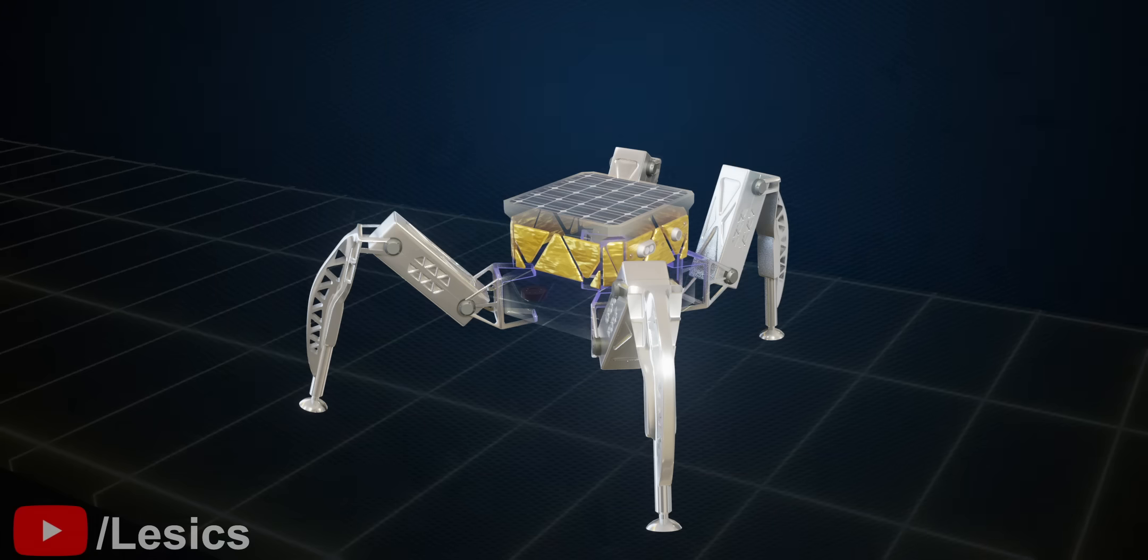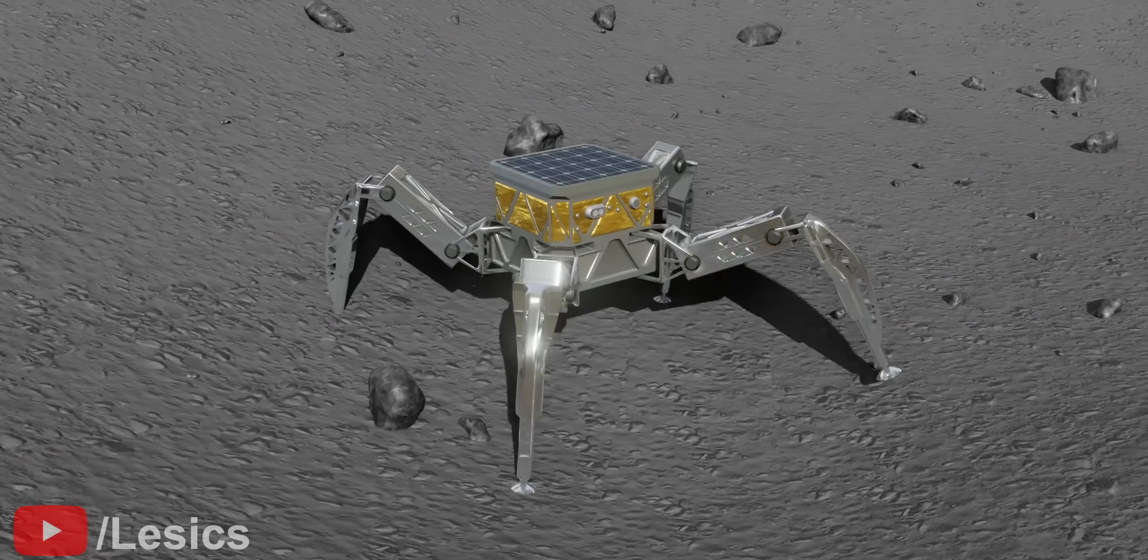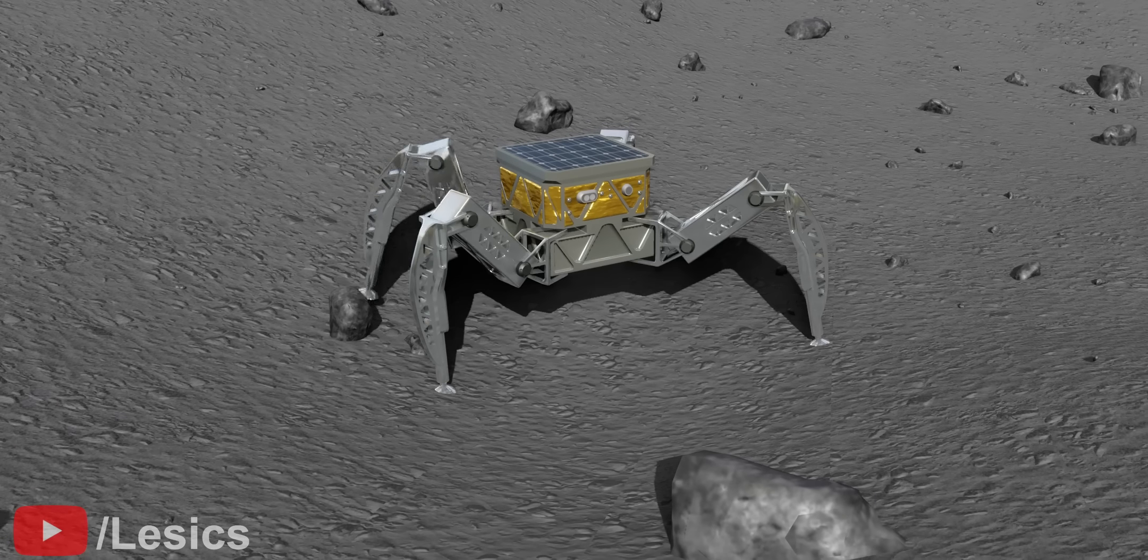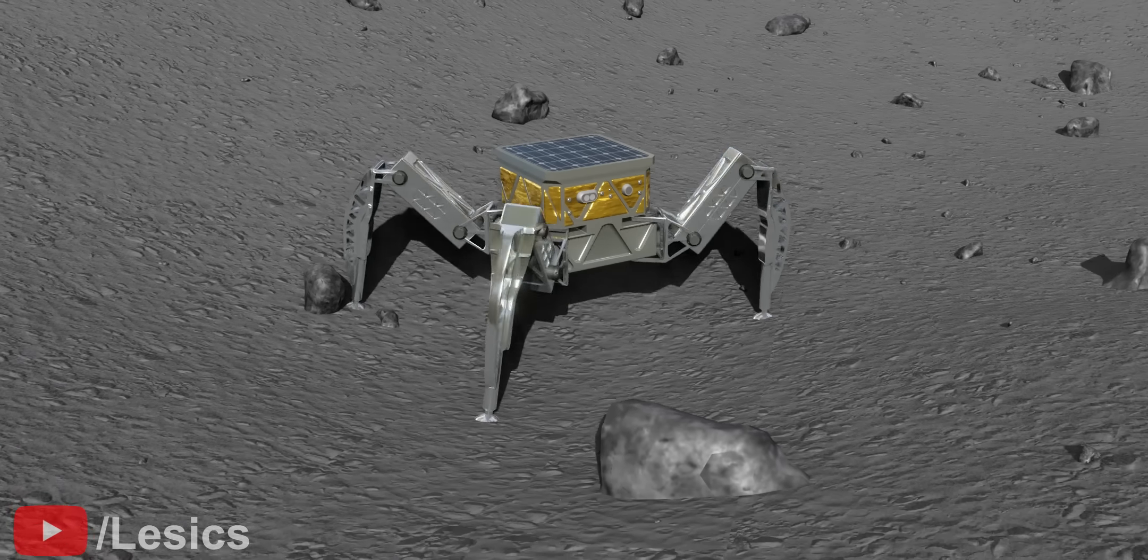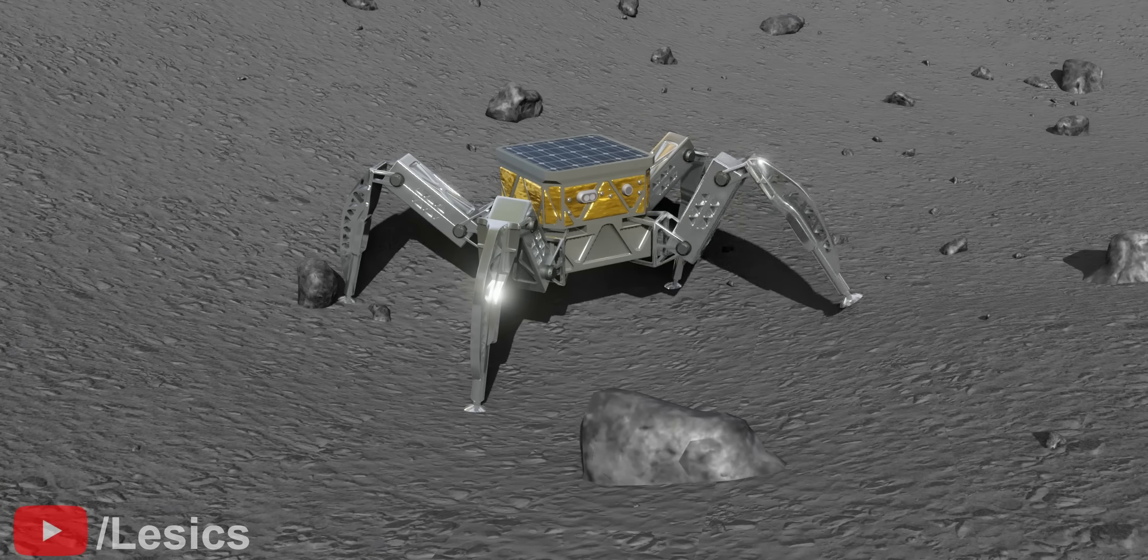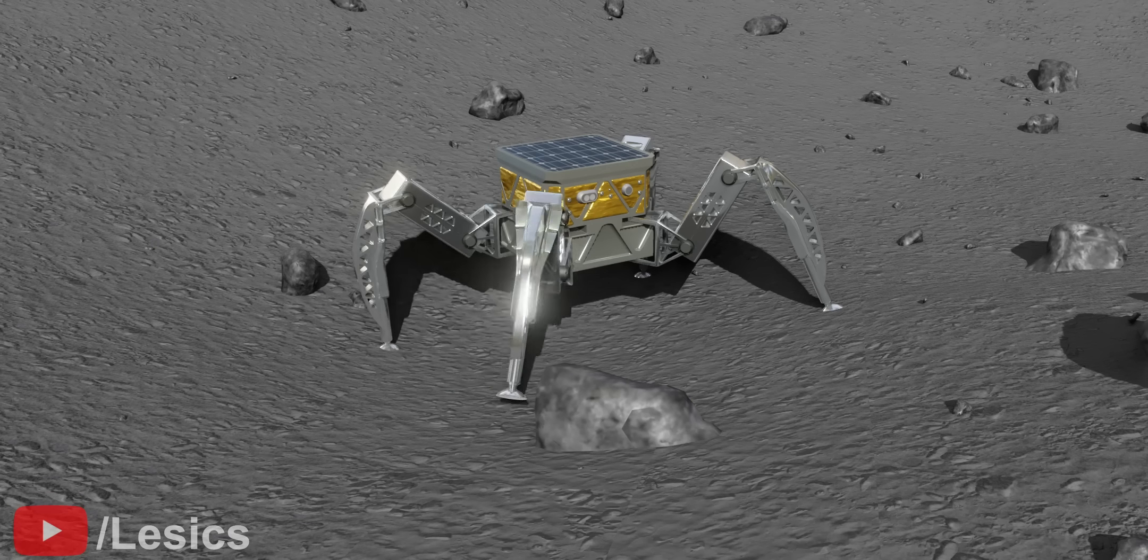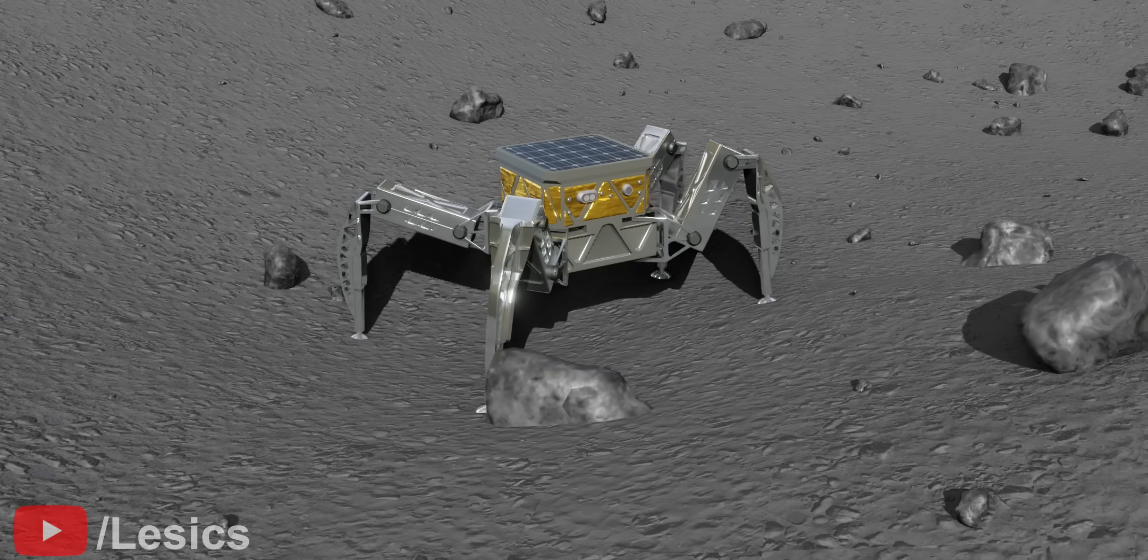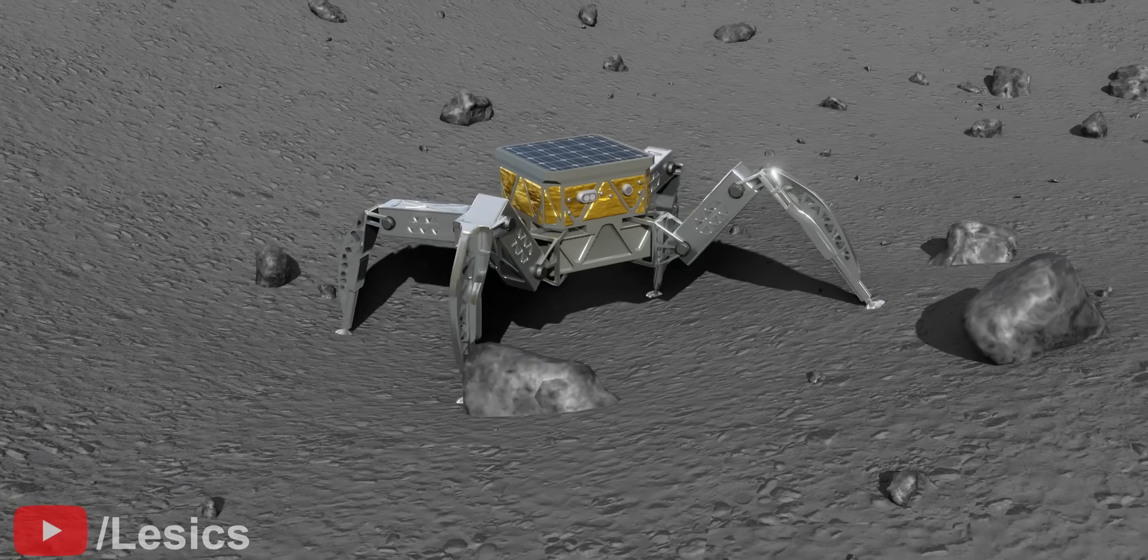Although this rover is useful on challenging terrain, it has some disadvantages, like the complex design and control system, as well as the slow walking speed, which makes it highly inefficient on flat surfaces. Before you leave, don't forget to be a member of the Lesix team. Thank you.